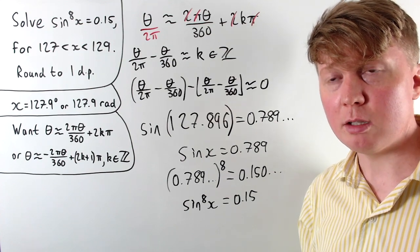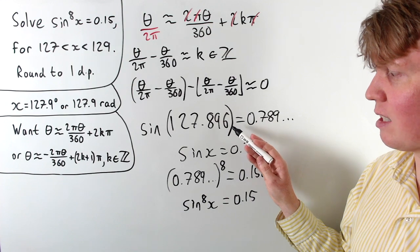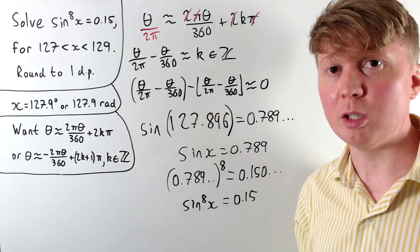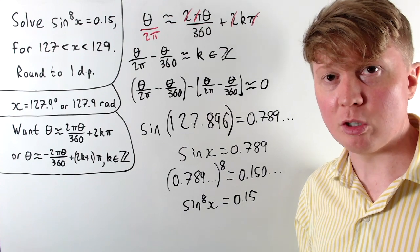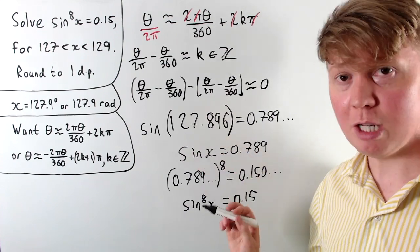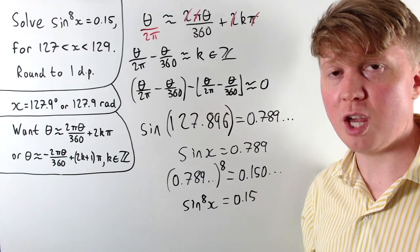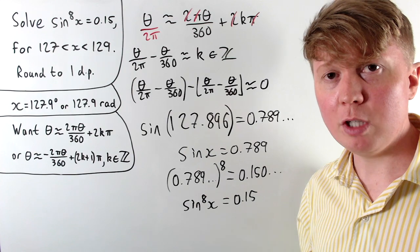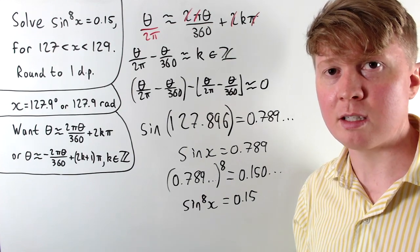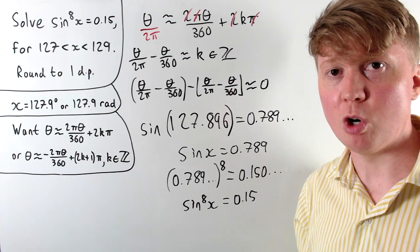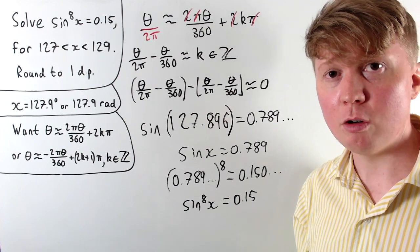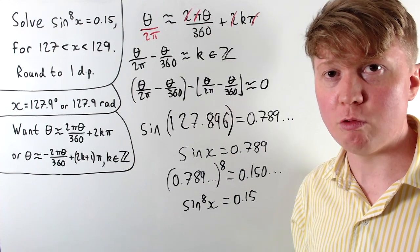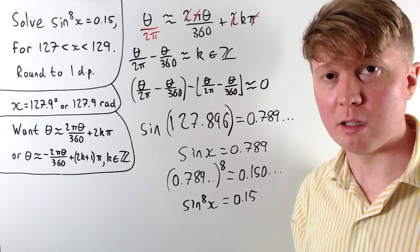It's interesting to note that 127.896 is exactly the number we had when working in radians, whereas the degrees solution was slightly different — so degrees are a bit more sensitive to small changes in θ than radians. If you're interested, you could try finding more equations like this with the same answers in degrees and radians, or as an extra challenge, find an equation with the same solutions whether working in degrees, radians, or even gradians.